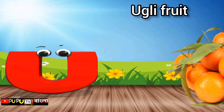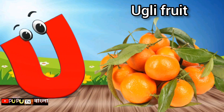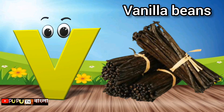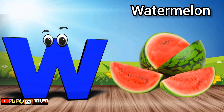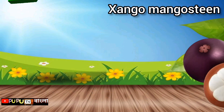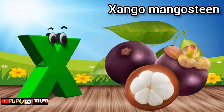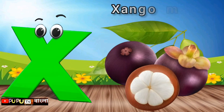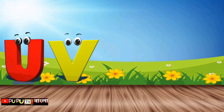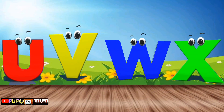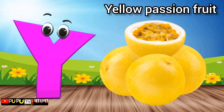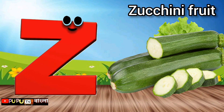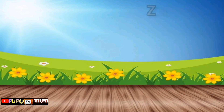U is for Ugly Fruit, Uh-Uh-Ugly Fruit. V is for Vanilla Beans, V-V-Vanilla Beans. W is for Watermelon, Watermelon. X is for Xango, X-X-Xango. Y is for Yellow Passion Fruit, Yeah-Yeah-Yellow Passion Fruit. Z is for Zucchini Fruit, Z-Z-Zucchini Fruit.